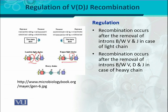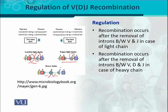In case of the heavy chain, there is an additional D region which stands for diversity of immunoglobulin. The RSS are arranged differently: V downstream has a two-turn, D upstream has a one-turn, D downstream has a one-turn, and J upstream has a two-turn. So two combines with one, and one combines with two, allowing different combinations of V, D, and J to develop.